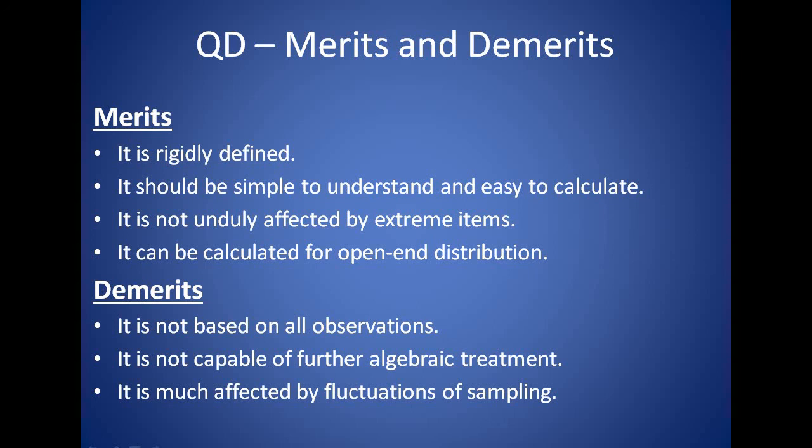We have covered measure of dispersion — its properties and importance — and four methods: range, quartile deviation, mean deviation, and standard deviation. Range and QD have been discussed. We will discuss mean deviation and standard deviation in the next class. Thank you.